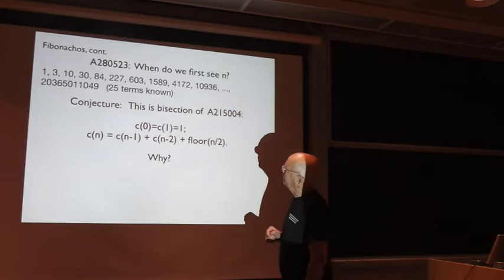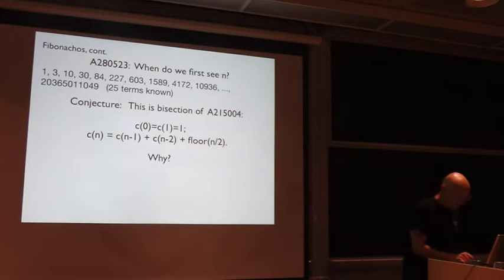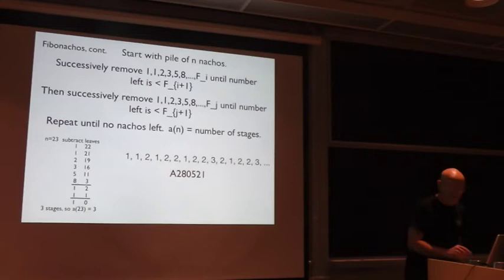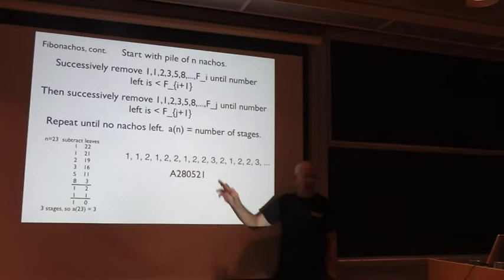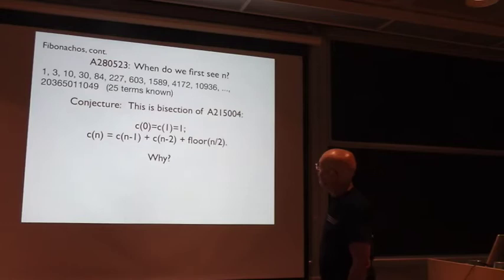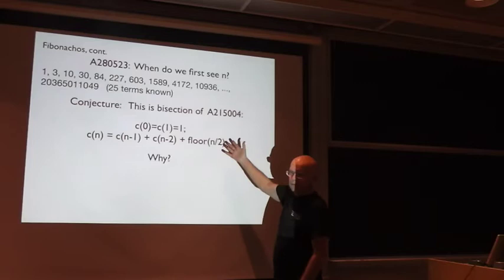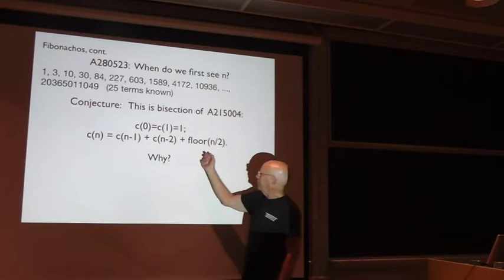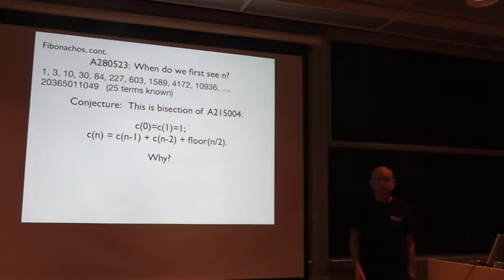So that's sequence A280523, whereas the crucial thing you want to remember is sequence A280521. So the basic sequence of the Fibonaccio's is A280521. The records in that sequence are A280523, which is the first time we need n stages to get down to 0. And there's a conjecture about that. This is a bisection of a sequence or a Fibonacci type sequence, but you don't just add the two previous terms, you add half n. Why? Probably not hard, but I suspect, so I offer it to you.